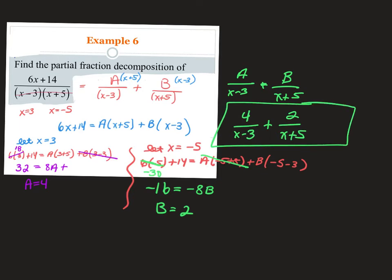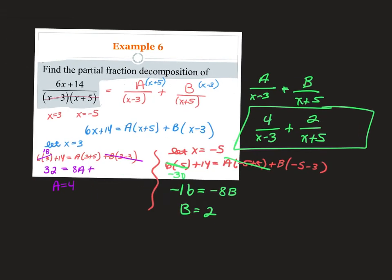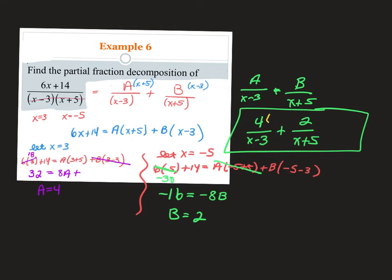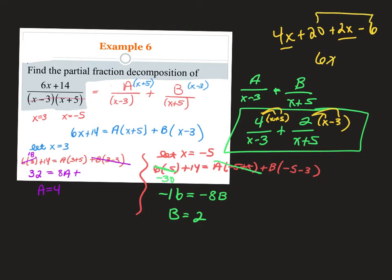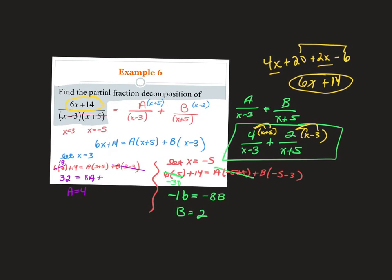You can check this: multiply the first numerator by (x plus 5) and the second numerator by (x minus 3). 4 times x is 4x, 4 times 5 is 20; 2 times x is 2x, 2 times negative 3 is minus 6. Combining: 4x plus 2x is 6x, and 20 minus 6 is positive 14 — which is exactly 6x plus 14, what we started with. It's not incredibly difficult, just a little tedious, but once you do a few it becomes easy.